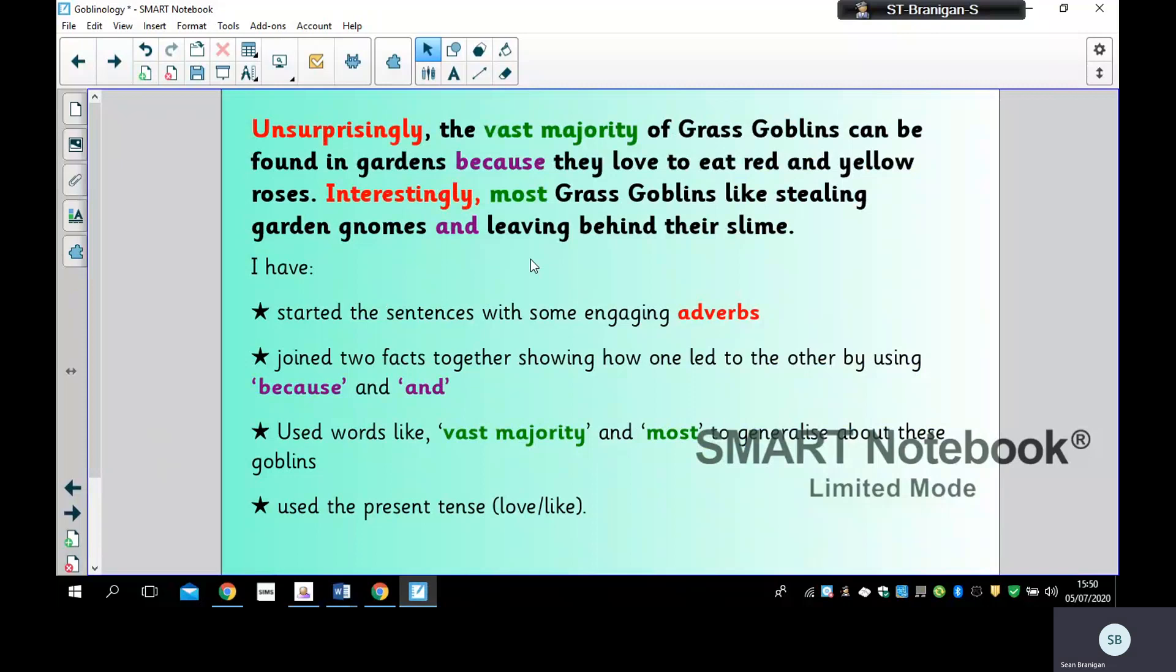So now that I've created this paragraph using some special words. The red words are the adverbs: unsurprisingly and interestingly. I've also used some conjunctions because and and, and they were to link the two sentences together.